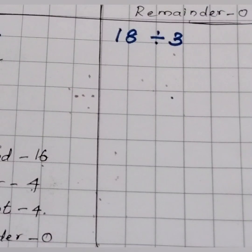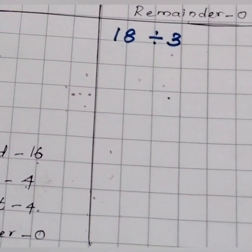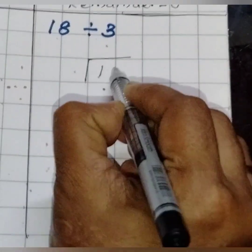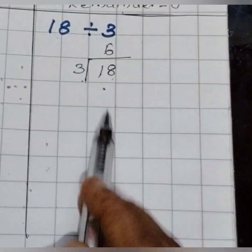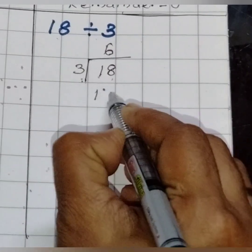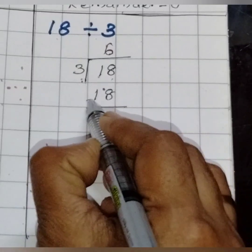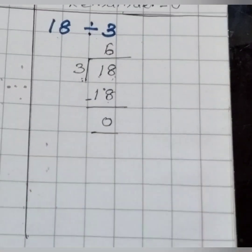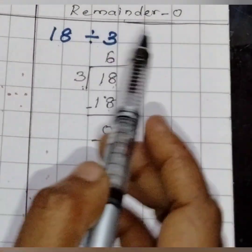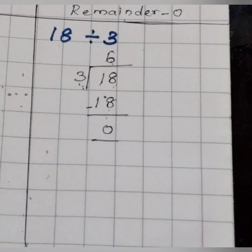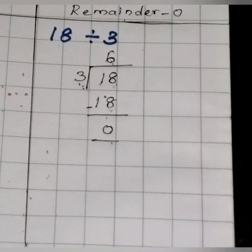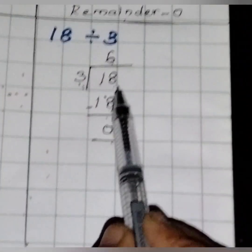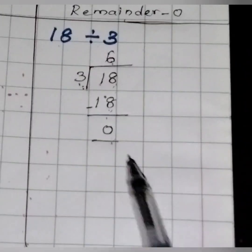Our next question is 18 divide by 3. Check when 18 comes in the 3 table — 3 sixes are 18. So 3 sixes are 18, and 18 minus 18 is 0. The quotient is 6, written on top. Don't forget to write the quotient on top — it is the mistake of every child to forget to write the quotient. Always remember to write the quotient and then write the answer. 3 sixes are 18.